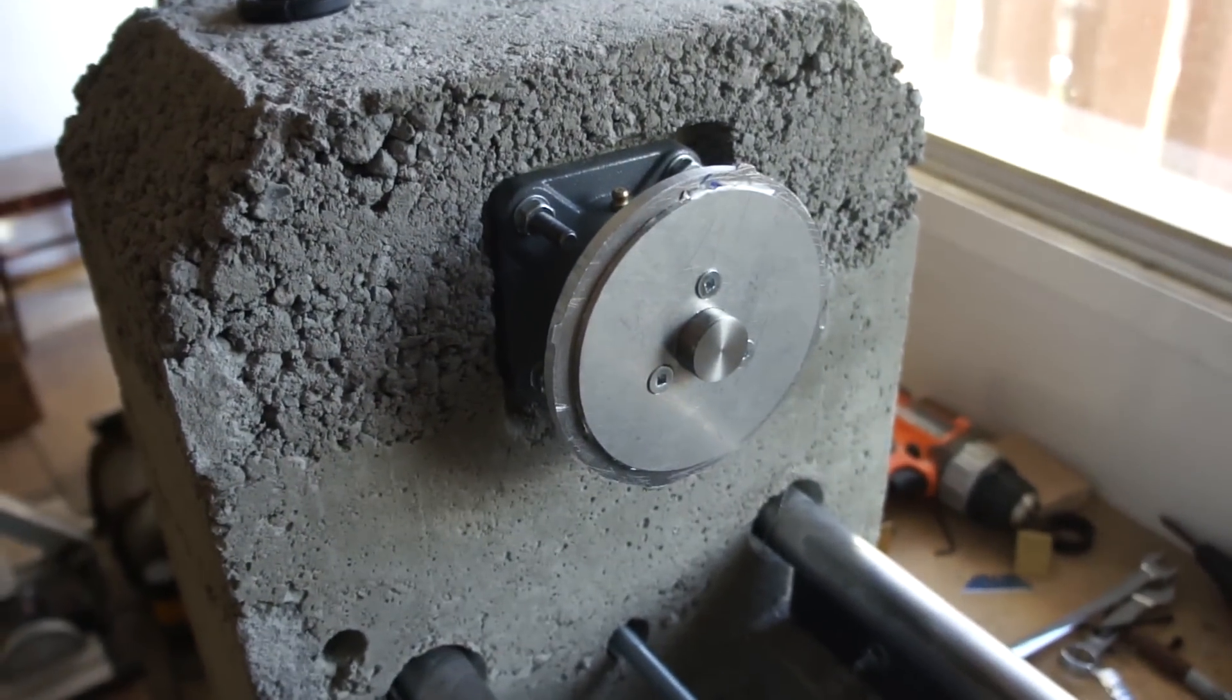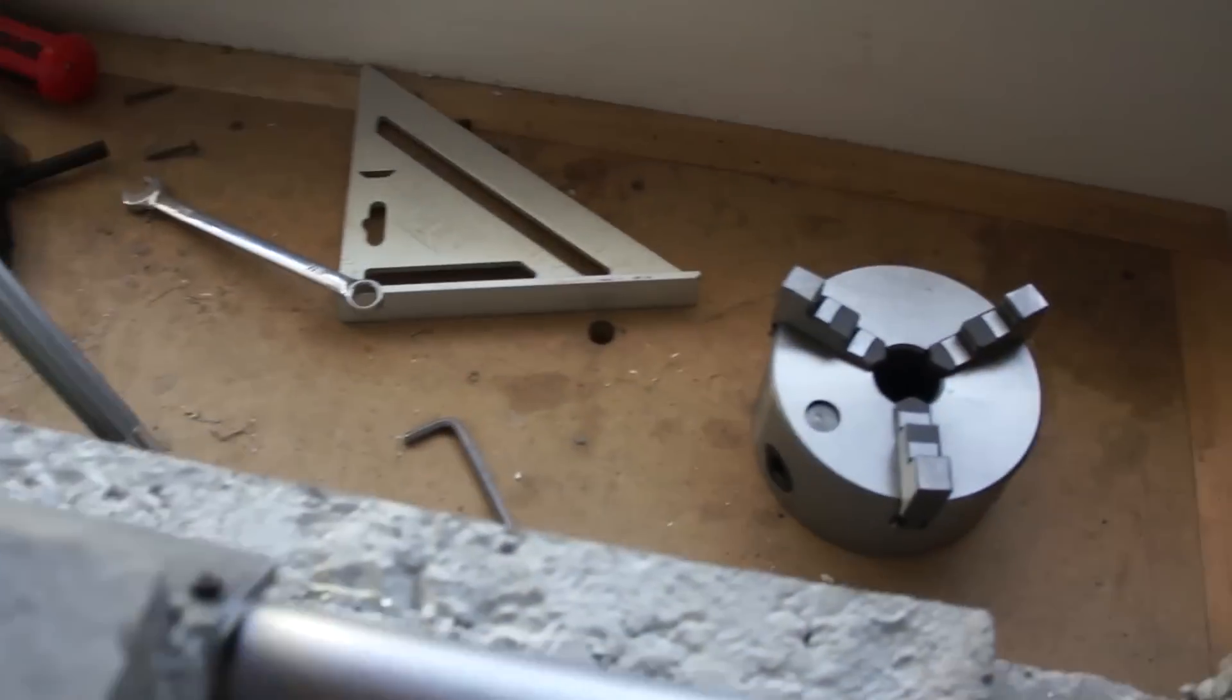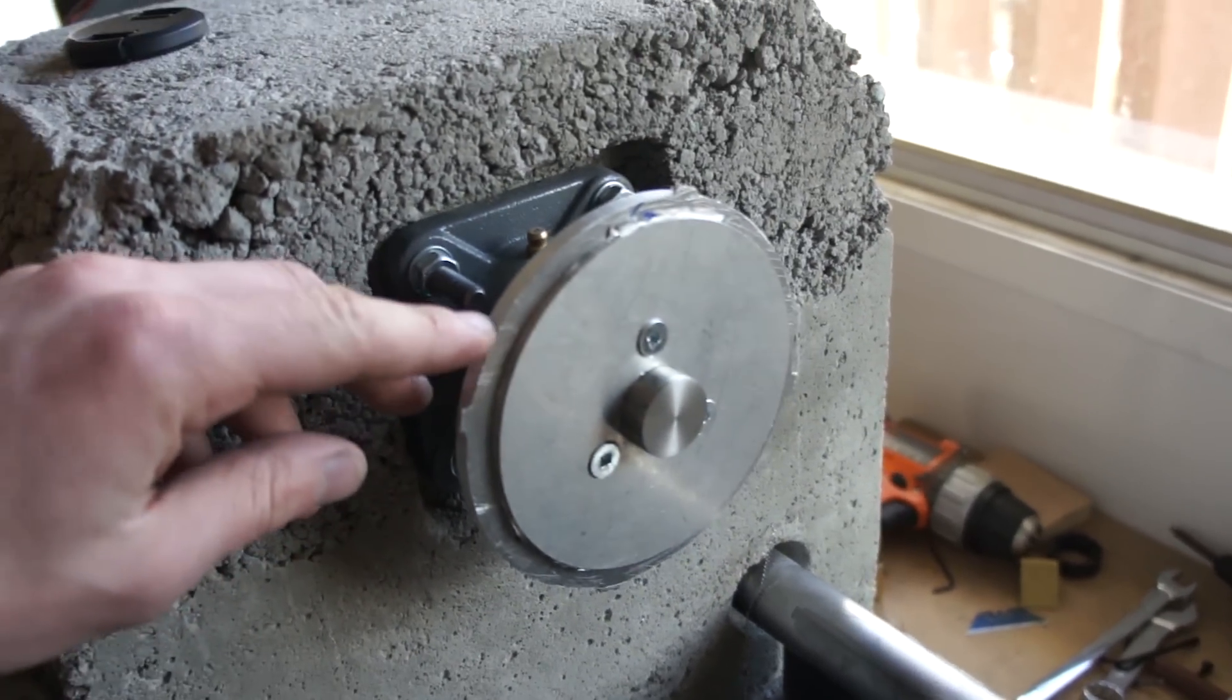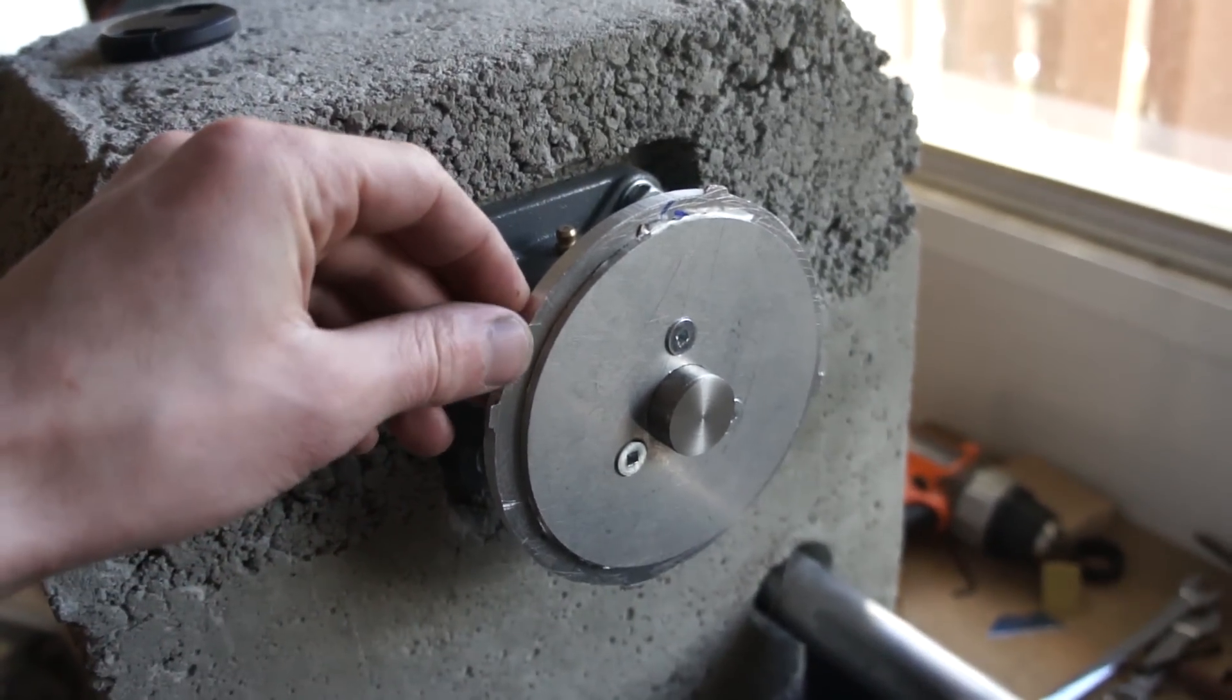So here you can see we have the plates ready to mount the big three-jaw, which I got sitting over there. What I ended up doing is I used a one-eighth plate and I used a half-inch plate, or a quarter-inch plate of aluminum.